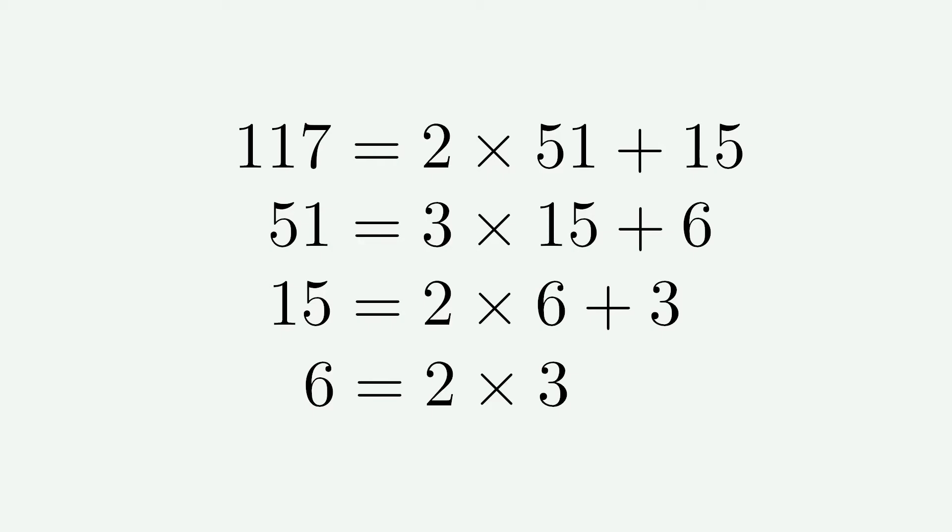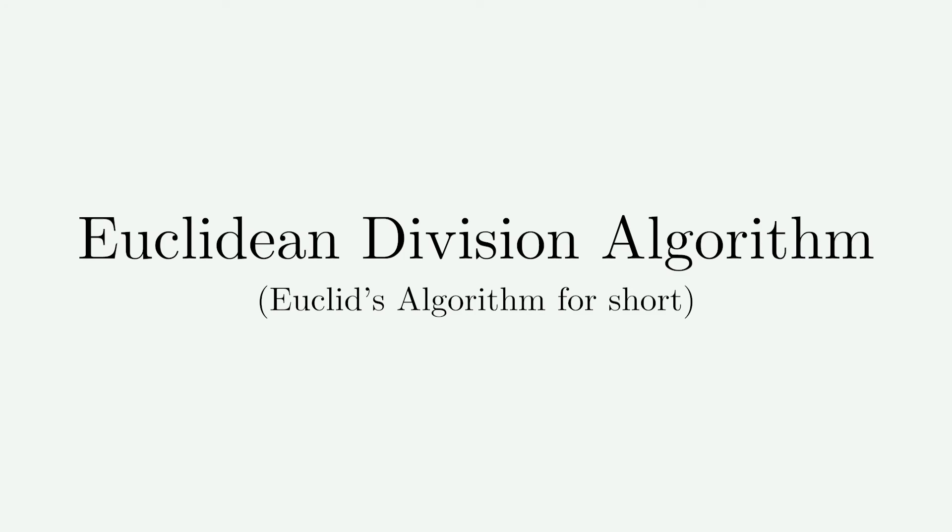Note that the highest common factor is always the last non-zero remainder. Now normally this would be the point in the video where I provide a proof, but we've actually already proved everything we need to know. This procedure terminates and the last non-zero remainder is the highest common factor.